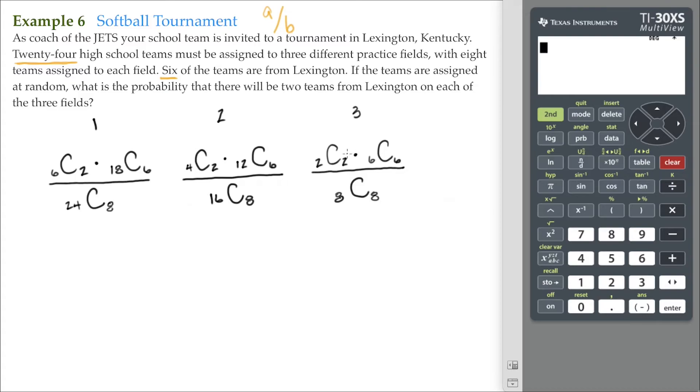Now, before we do any of this, logic should tell you that since there's only one field left, there's only one way to assign the rest of the teams. And, of course, eight choose eight, that's one.